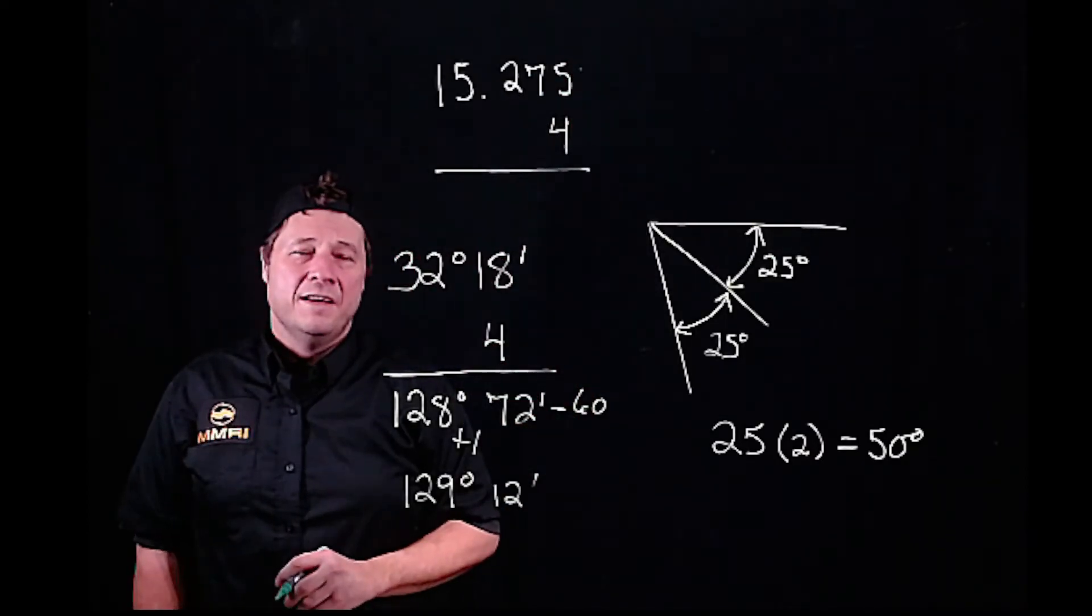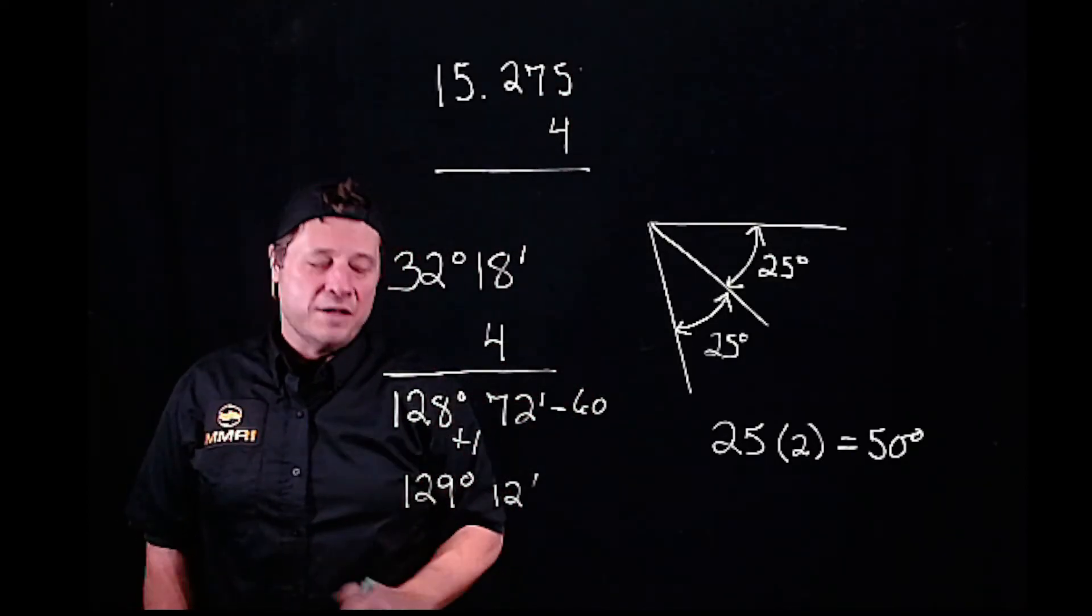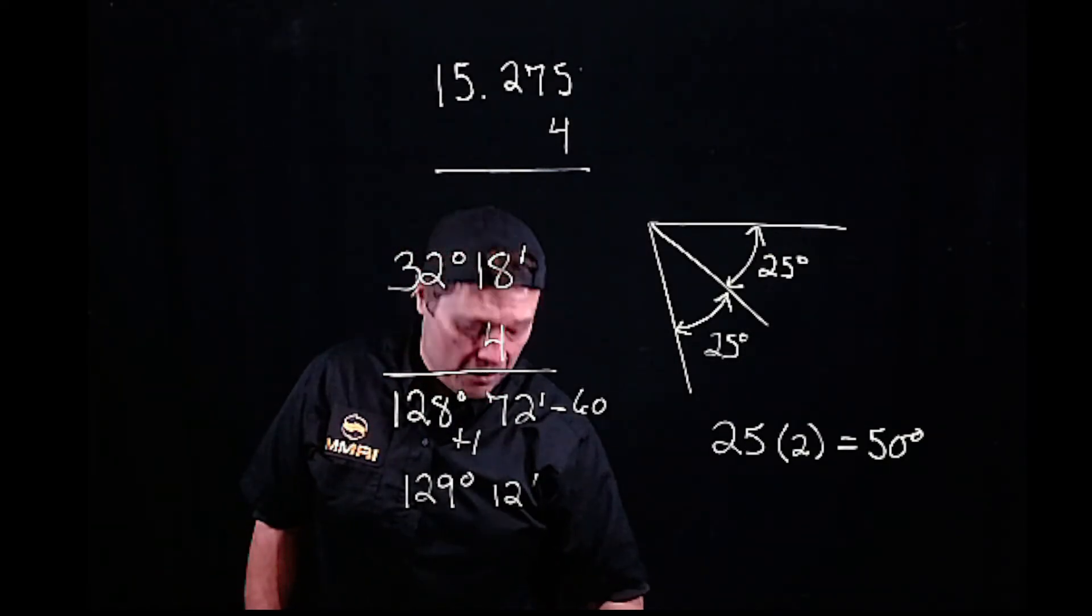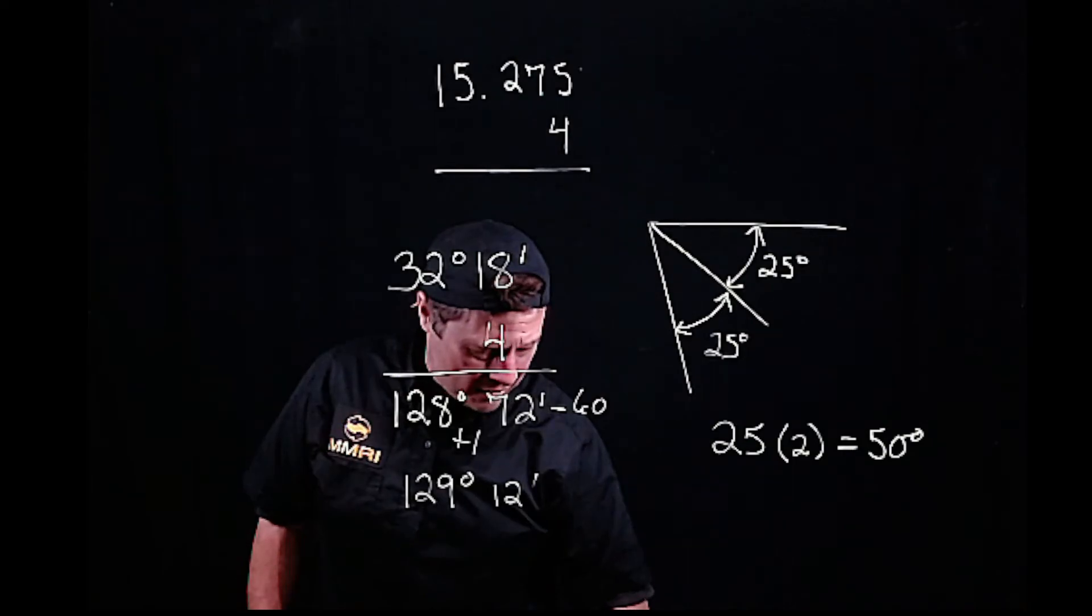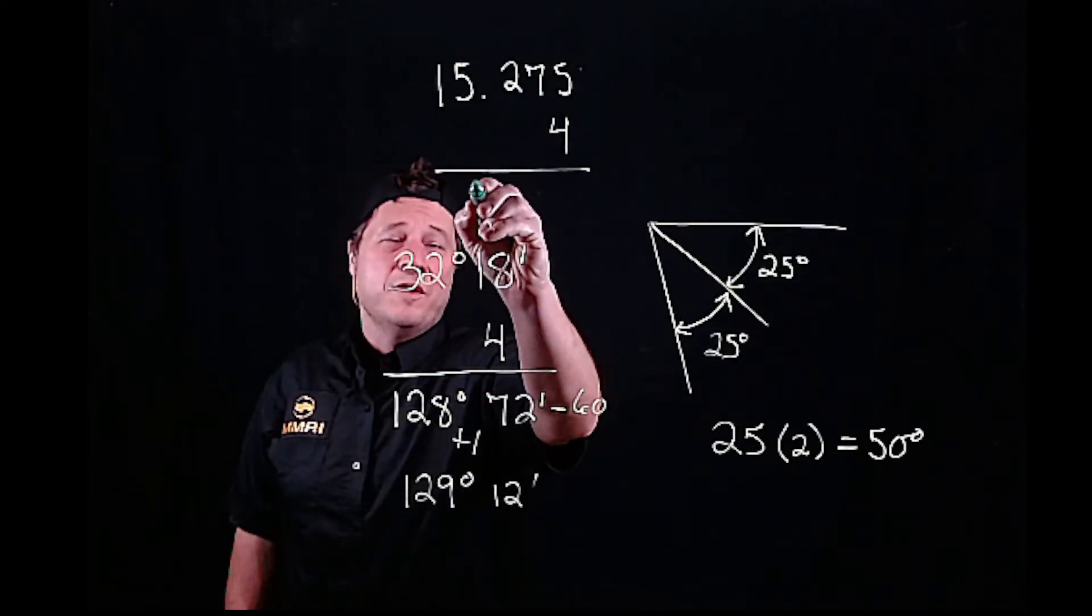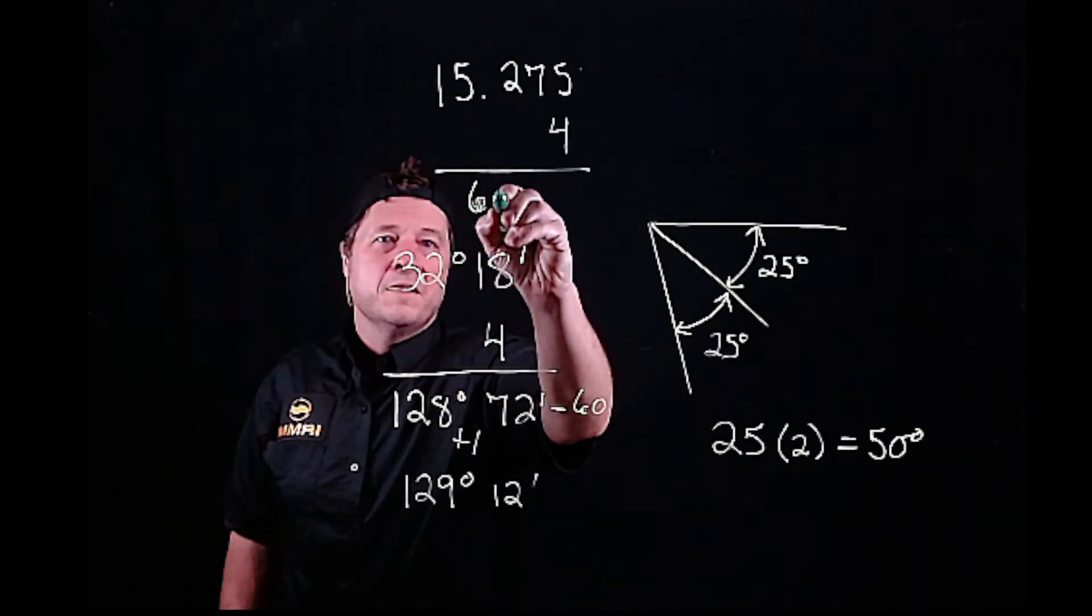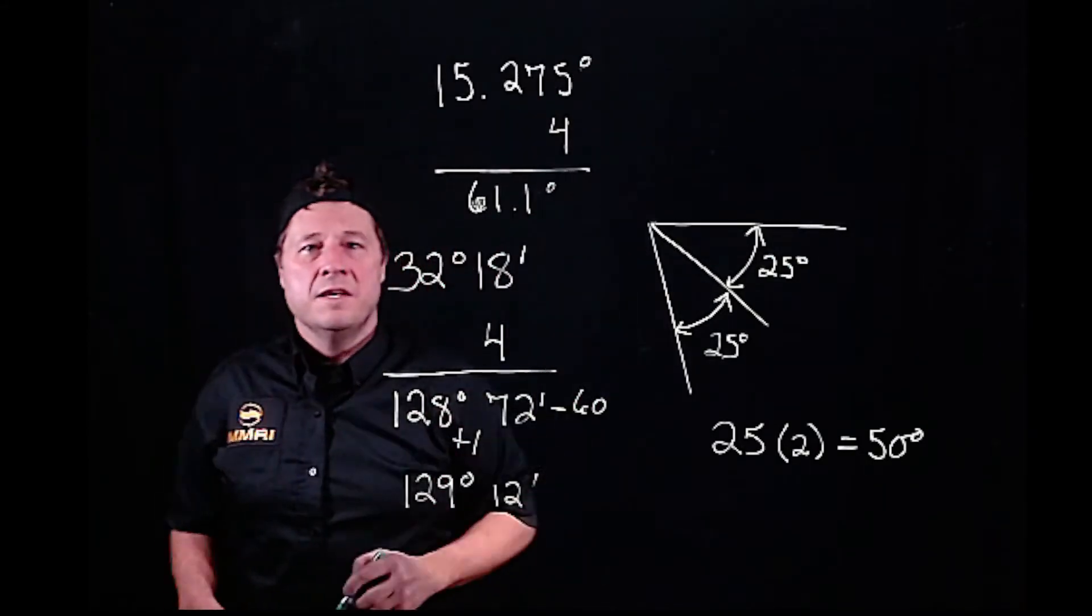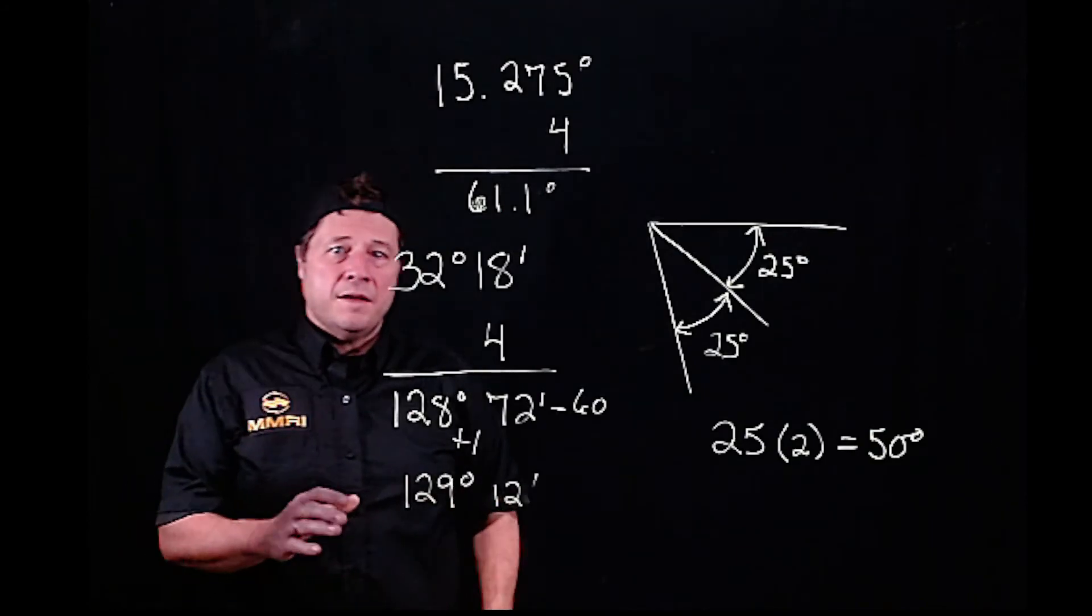You just multiply this number and then you add the degrees, so it'd be 4 times 15.275. Way easier because we get 61.1 degrees, because we're talking about degrees.